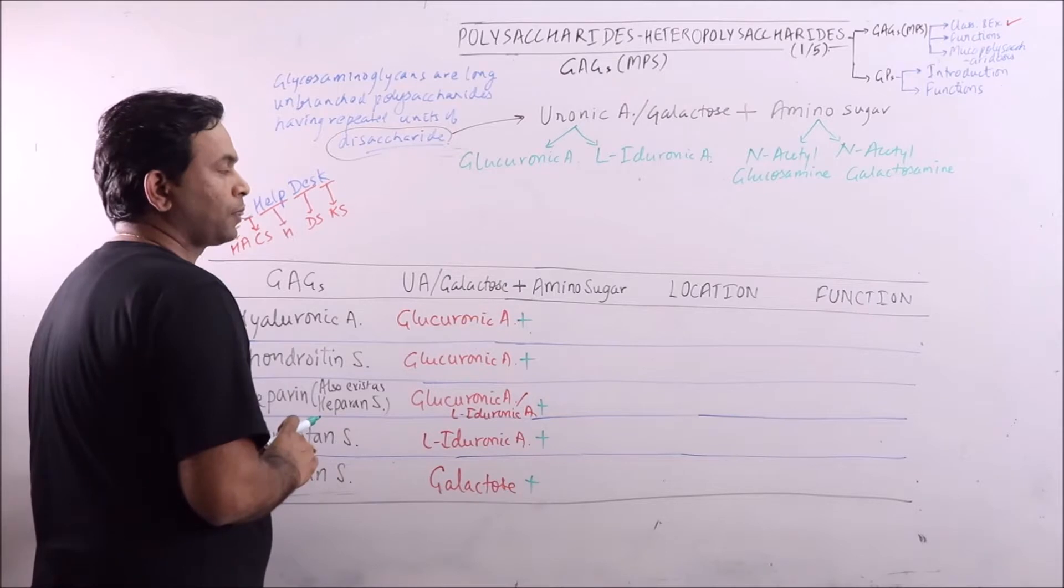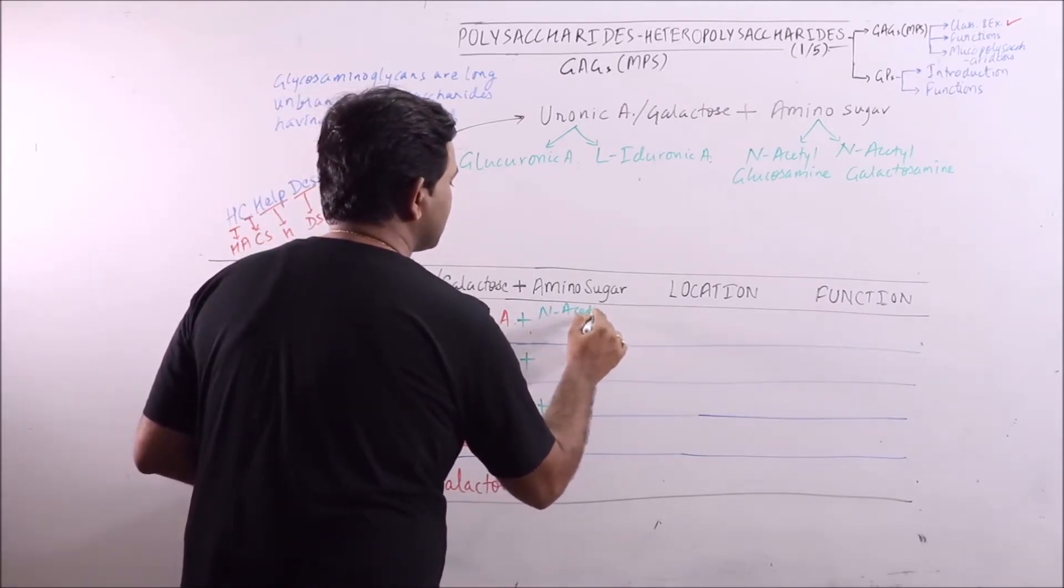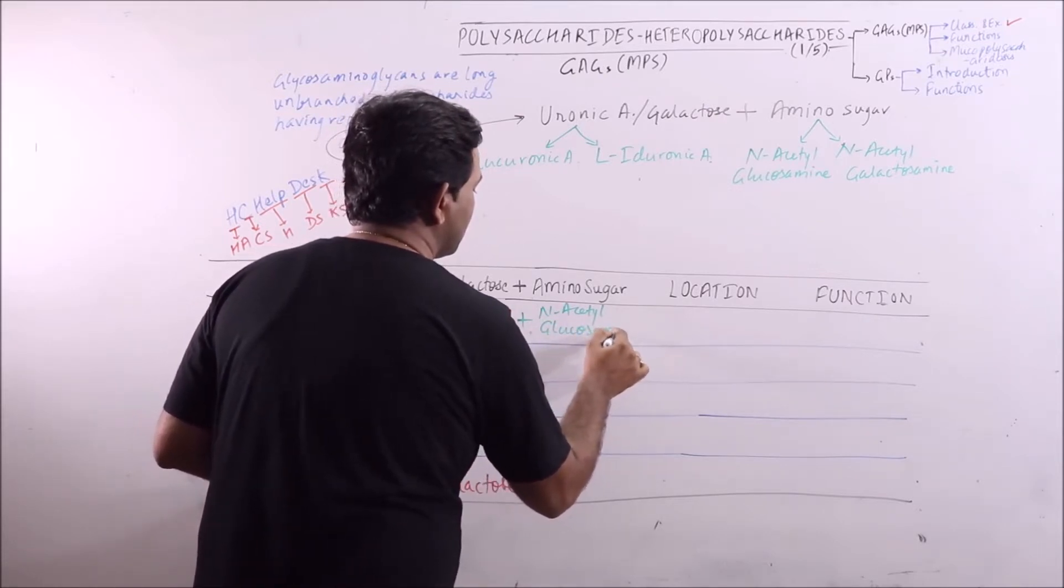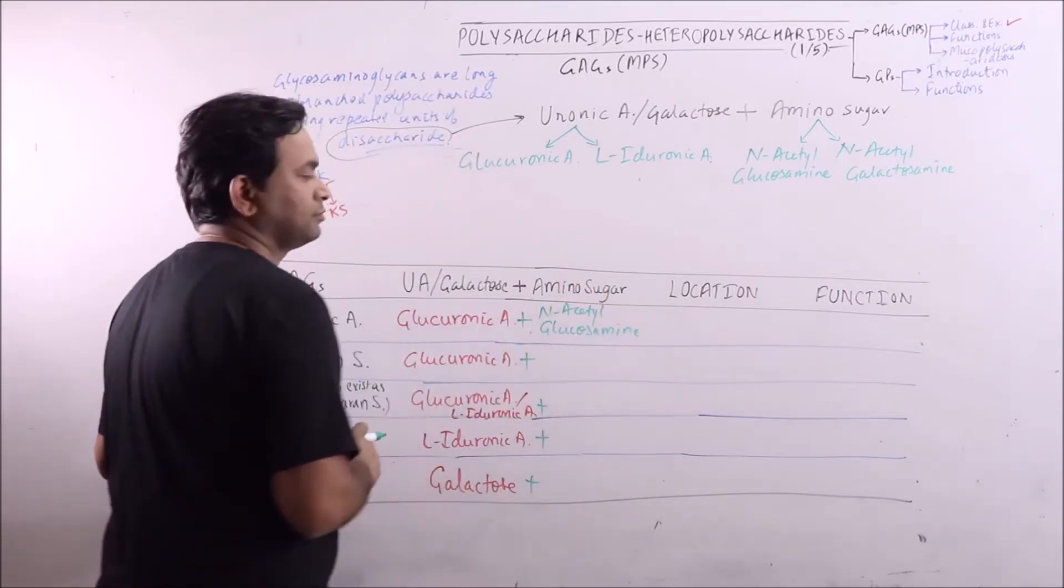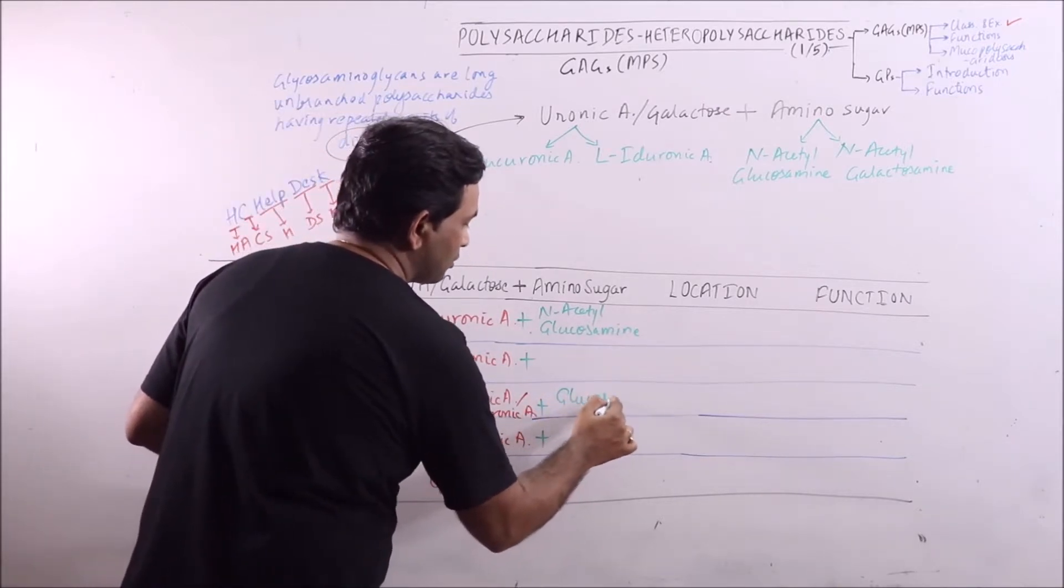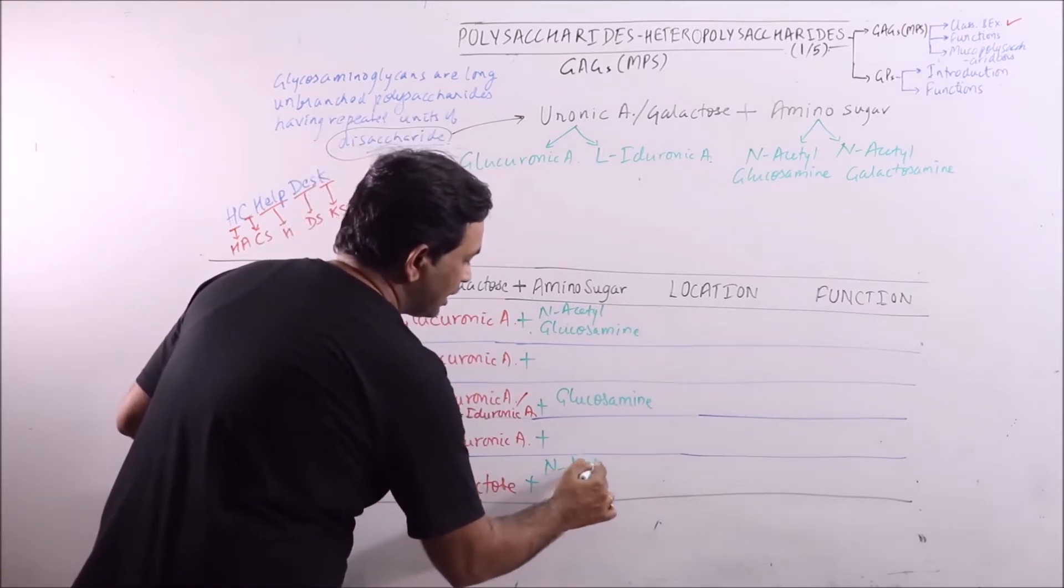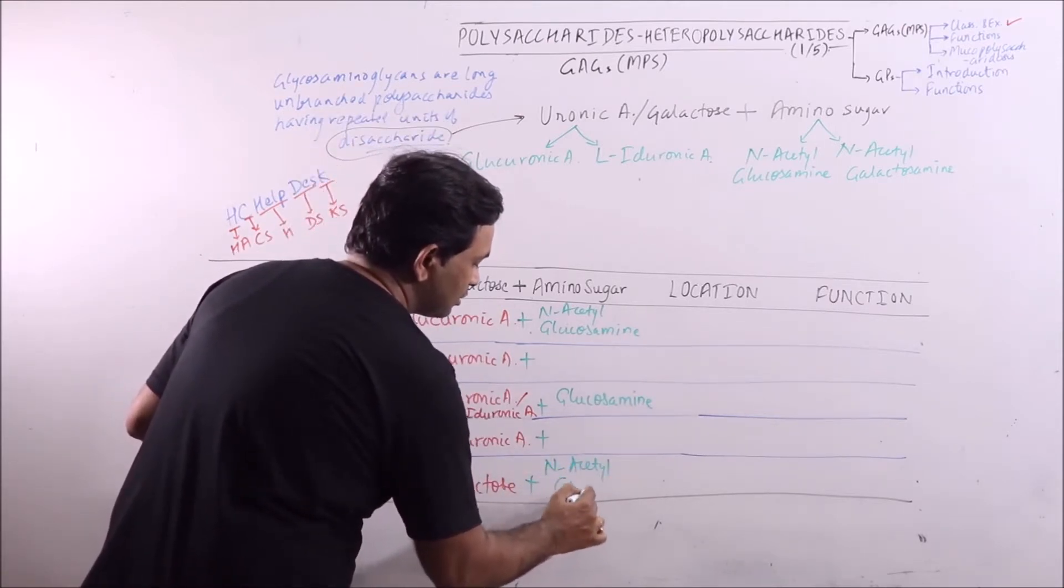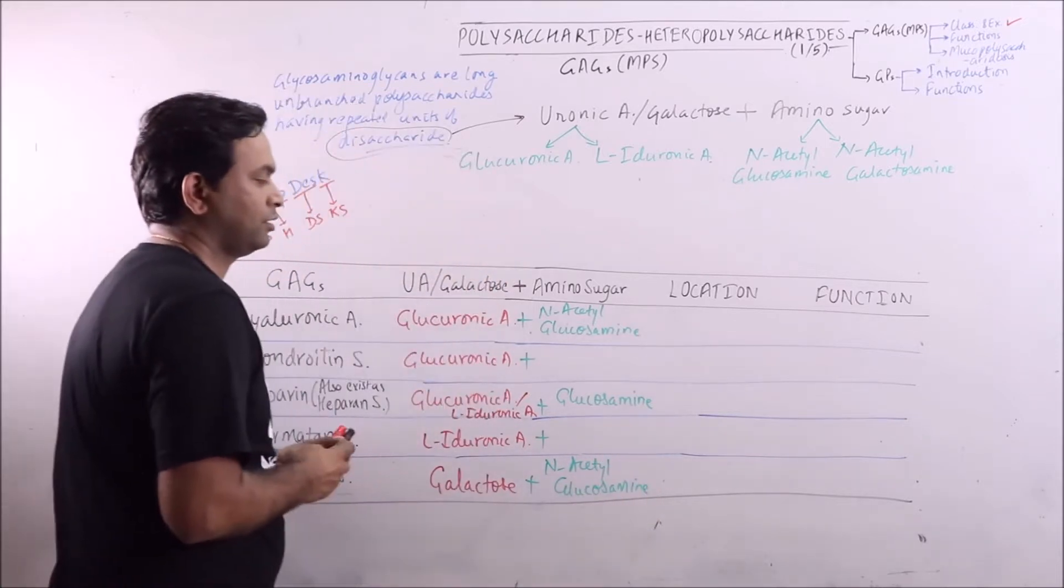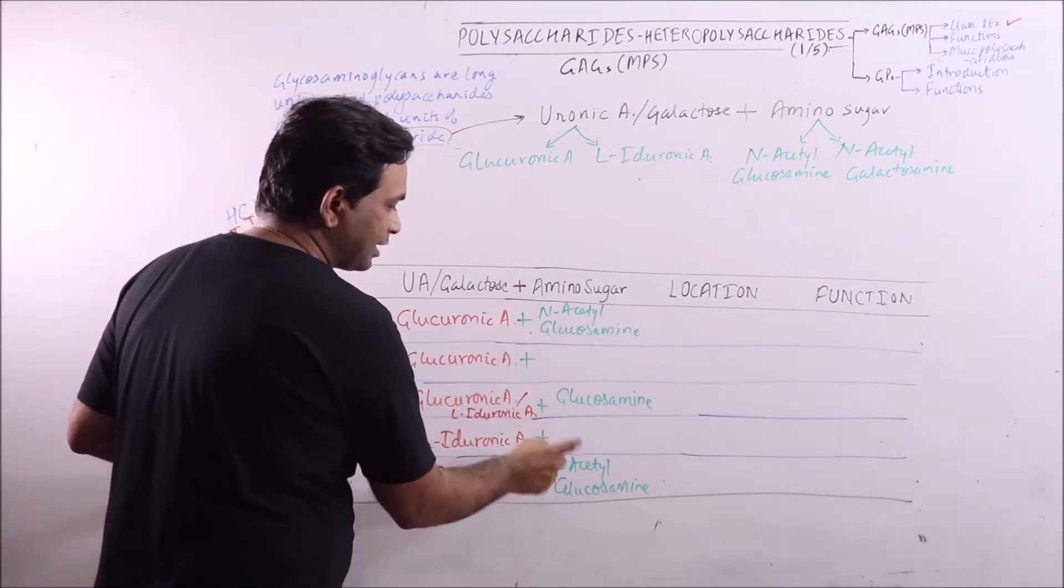Now amino sugar: N-acetyl glucosamine. Now glucosamine is coming alternately.